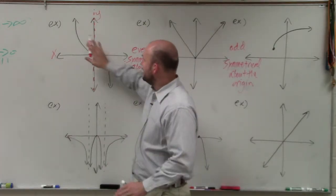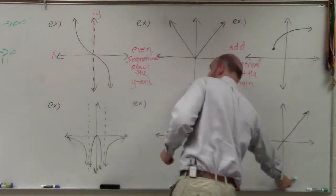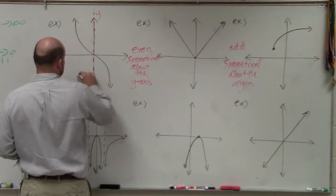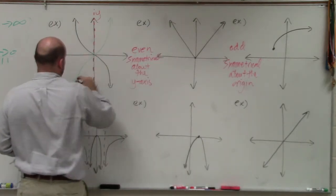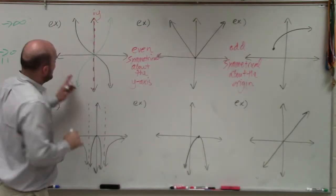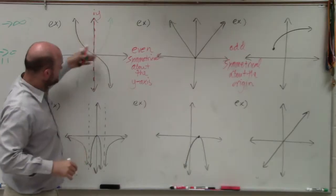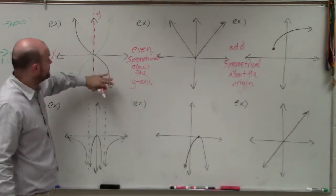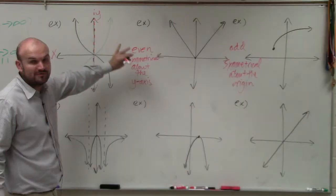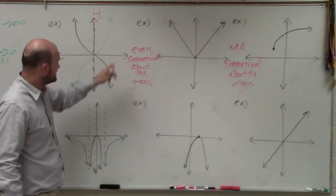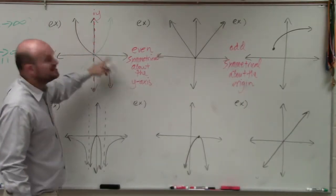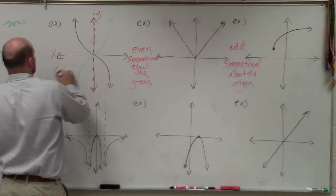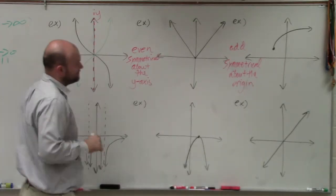However, if I reflect the graph over the y-axis, I produce something that looks like this. Then if I take that green graph and reflect it over the x-axis — which represents reflecting over both the y and x-axis for the origin — I produce the exact same equation. So therefore, this graph is odd.